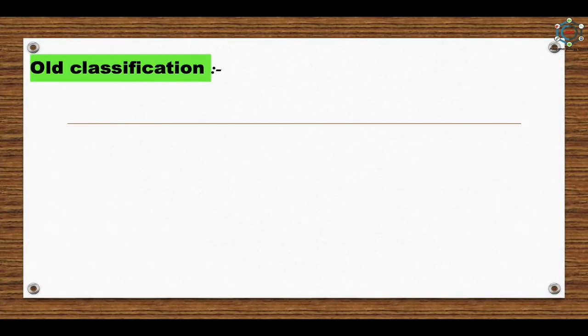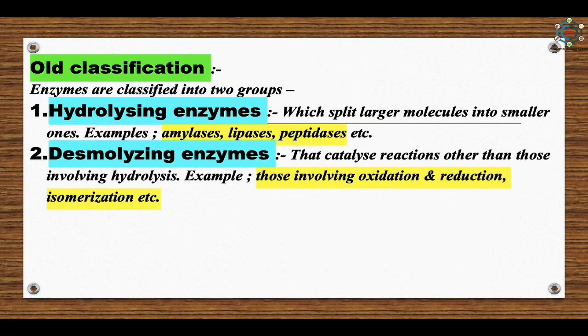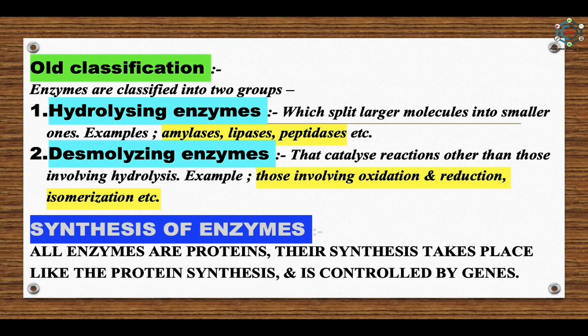Old classification: enzymes are classified into two groups. First, hydrolyzing enzymes, which split larger molecules into smaller ones; examples: amylases, lipases, peptidases. Second, desmolases, which catalyze reactions other than those involving hydrolysis, such as oxidation-reduction and isomerization. Regarding synthesis of enzymes: all enzymes are proteins, and their synthesis takes place like protein synthesis, controlled by genes. There is generally one gene for one enzyme — this is known as the one gene, one enzyme hypothesis.